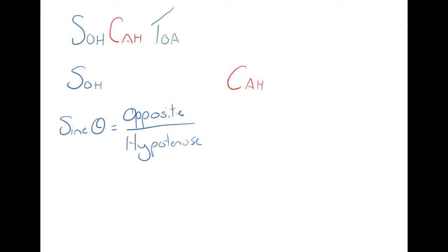Cah stands for cosine, or cos theta equals adjacent over hypotenuse. So if the sides that you have are the adjacent and hypotenuse sides, you should be using cos.